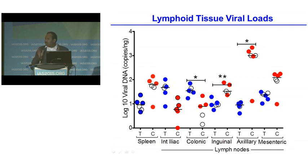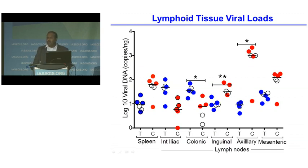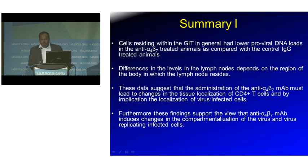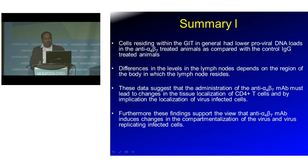This suggests that the antibody mediates trafficking of the virus — either trapping the virus in place by not allowing cells to migrate, or vice versa. We are currently working on the mechanisms. What we are documenting at this stage is that there is a differential tissue targeting with treatment of this antibody. To summarize: cells residing within the GI tract had lower proviral DNA loads in anti-alpha-4 treated animals compared to IgG controls. Differences in lymph node levels depend on the region of the body in which the lymph node resides. These data suggest that targeting this molecule must lead to changes in tissue localization of CD4 T-cells and, by implication, the localization of virus-infected cells.